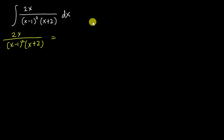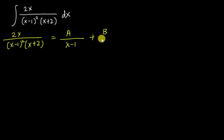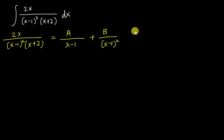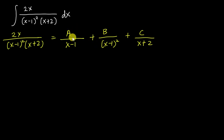Doing the partial fraction decomposition, I get A over (x-1) — that's (x-1) to the power one — plus B over (x-1)² . If the power were three, I'd have three terms up to (x-1)³, but here it's just squared. Then plus C over (x+2). So I have three different terms.